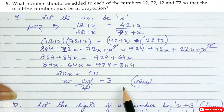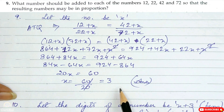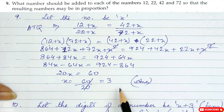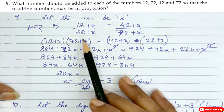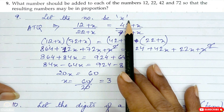Question number 9: What number should be added to each of the numbers 12, 22, 42, and 72 so that the resulting numbers may be in proportion? Please revise Class 7 ratio and proportion if needed. Let the number be x.